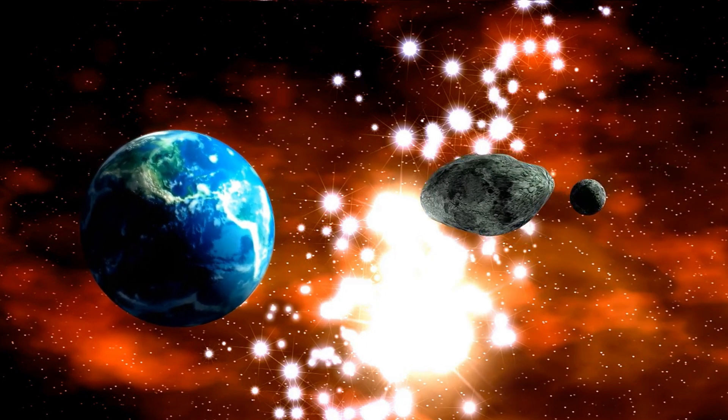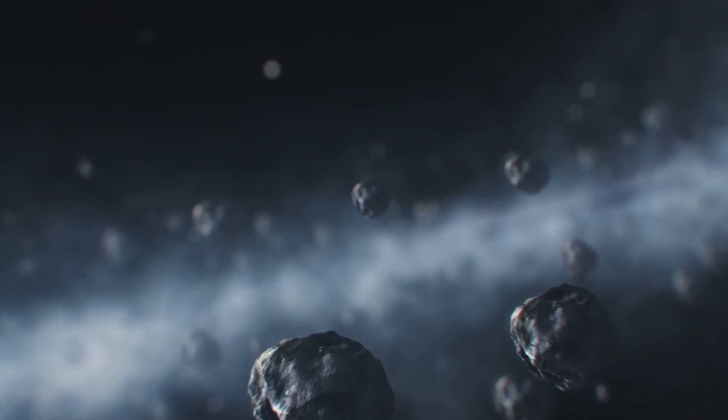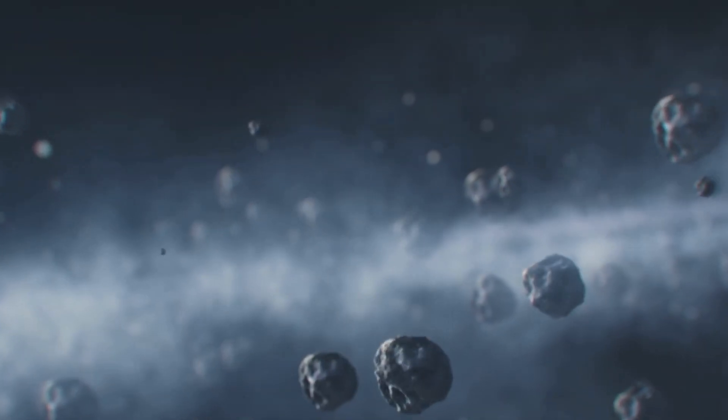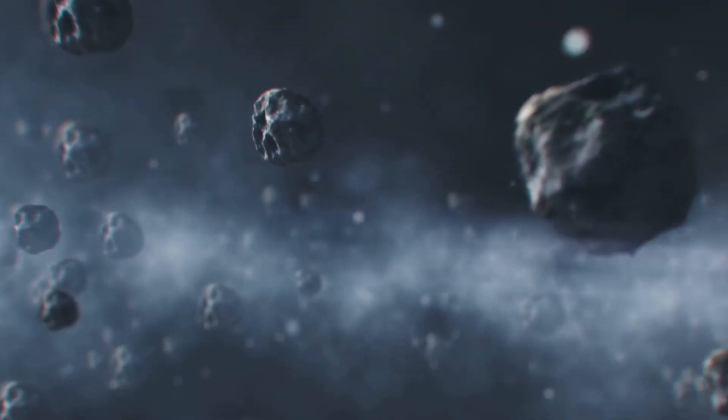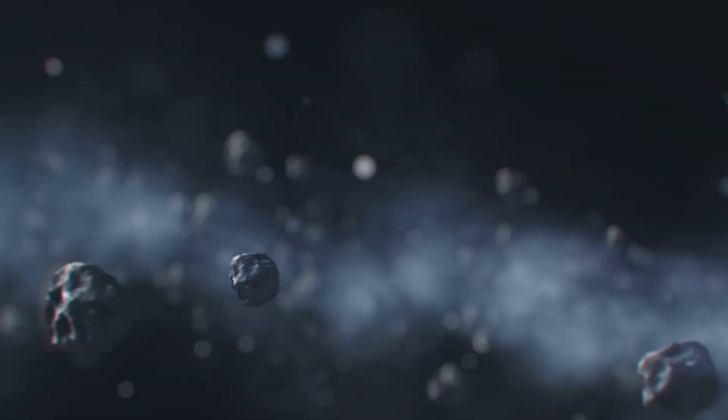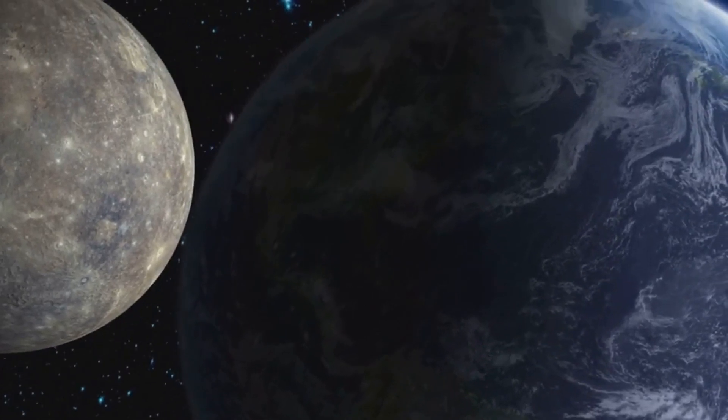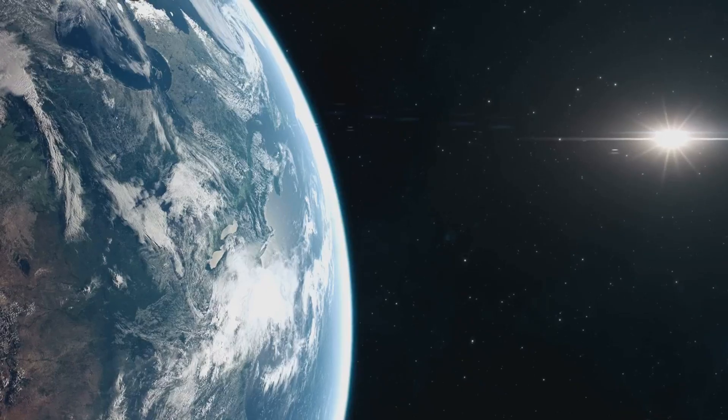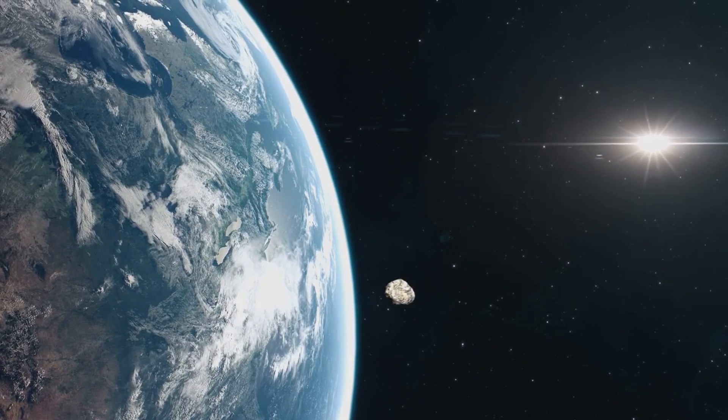This surprise asteroid didn't just leave a mark on Chelyabinsk, it served as a wake-up call for the entire world. The event was a stark reminder that our planet is constantly moving through a cosmic shooting range. Asteroids, the rocky remnants from the dawn of our solar system, are whizzing past us all the time, and occasionally, they hit us. The Chelyabinsk meteor was relatively small in cosmic terms, and it exploded high enough to prevent a ground impact. But what if it was larger? What if it exploded closer to the ground? The potential for widespread destruction and loss of life is very real.